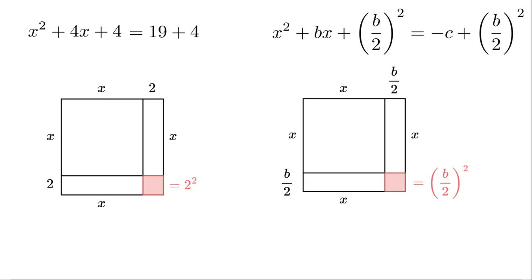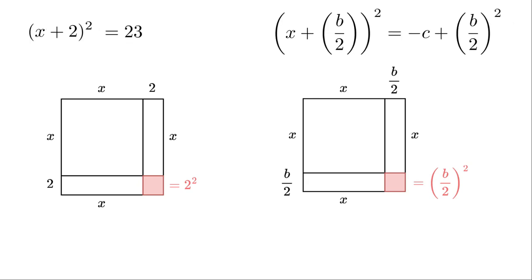We can now factor the left hand side by asking the same question as earlier. What are two numbers that when added equal 4, but when multiplied equal 4? The answer is two identical values that are each 2.